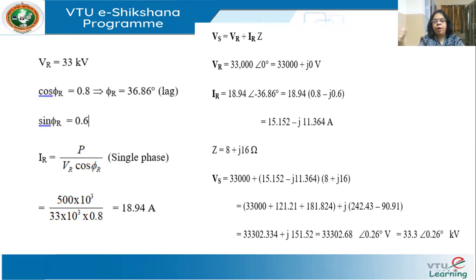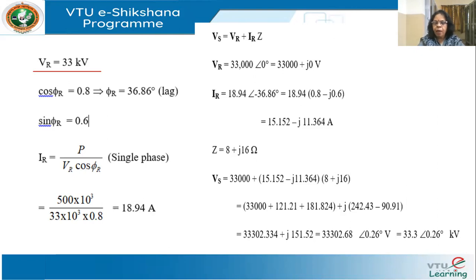Whenever you have any problem, start analyzing with the data. For transmission lines, always start from the receiving end, because most often you will have all the receiving end data — the load, the power factor, the receiving end voltage, etc. The receiving end voltage is 33 kV, and it is a single-phase system. The power factor cos φR is 0.8, therefore sin φR is 0.6. In the equations for sending end voltage, you need both cos φR and sin φR.